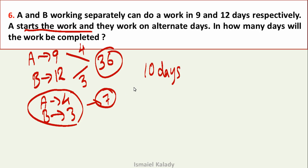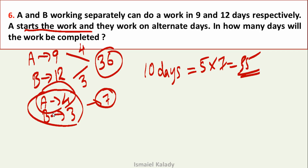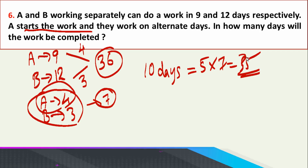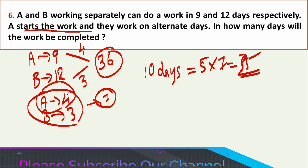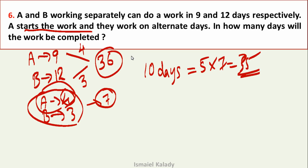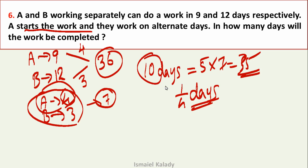In 5 pairs of days (10 days), work done is 5 × 7 = 35 units. Remaining work is 36 minus 35 = 1 unit. On day 11 it's A's turn, A does 4 units per day, so remaining 1 unit takes 1/4 of a day. Total days = 10 and 1/4 days.